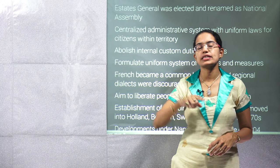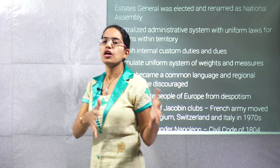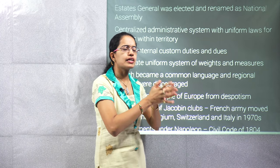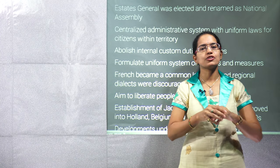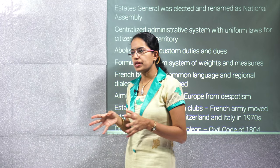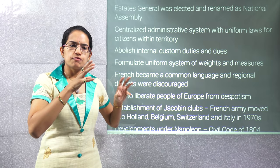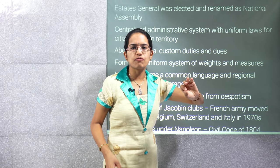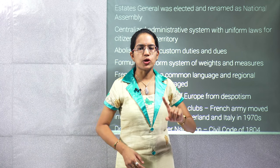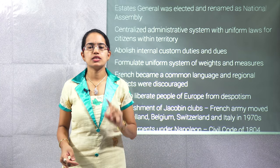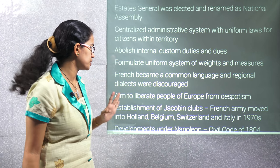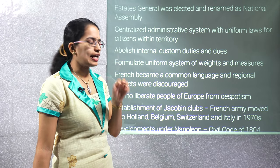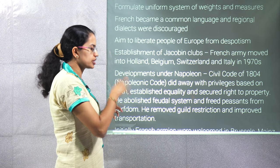These were the developments that took place under Napoleon. Initially you had the Bourbon rule, or monarchy, which collapsed. Democracy was brought in, then Napoleon came in. Despite the spread that Napoleon had and the Napoleonic wars that took place, the Civil Code of 1804 introduced important reforms: a uniform system of weights and measures, a uniform currency, improved transportation, abolition of serfdom and the feudal system. In that region French became a common language, and local dialects were given less importance or discouraged.